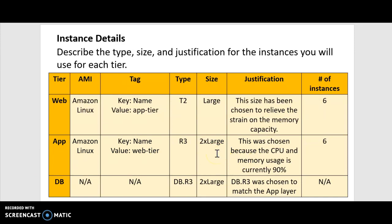Since the CPU and memory usage is currently at 90%, having a larger size will deal with this. And the reason that the database is db.r3 is because it's chosen to match the app layer.